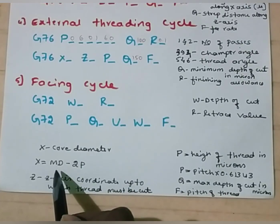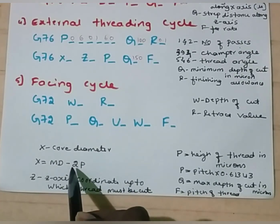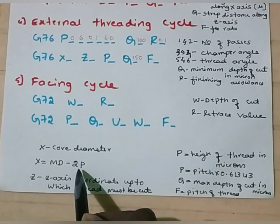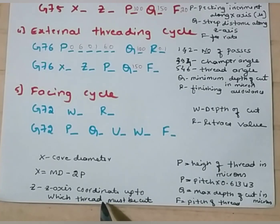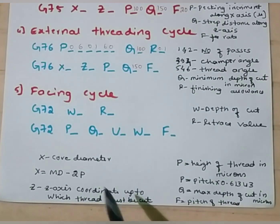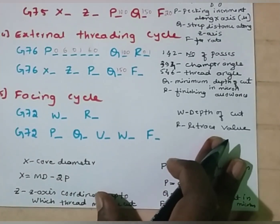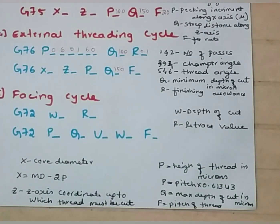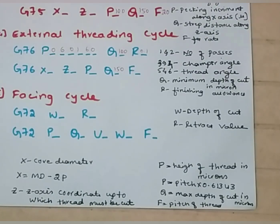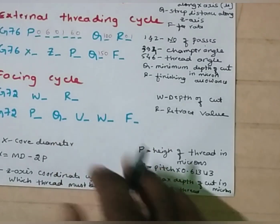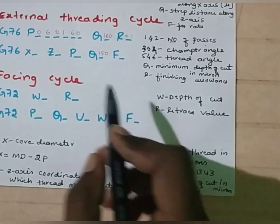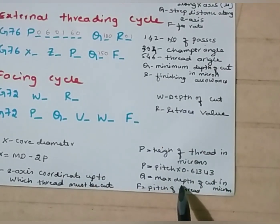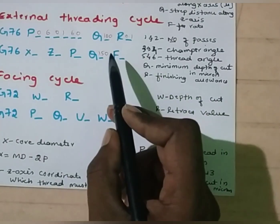P here is height of thread — we have to substitute the value of P in mm. Next, Z is nothing but the Z-axis coordinate up to which thread must be cut; Z-value can be calculated by looking at the diagram or geometry given. P is height of thread in microns — the formula to calculate P is pitch multiplied by 0.61343, and pitch will be given in the question. Q is nothing but maximum depth of cut in microns — I am going to assume it as 150 microns.